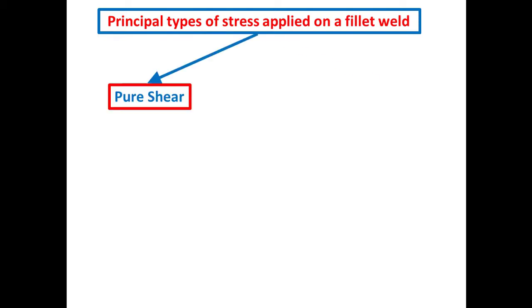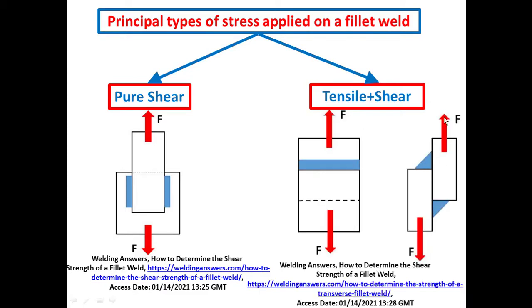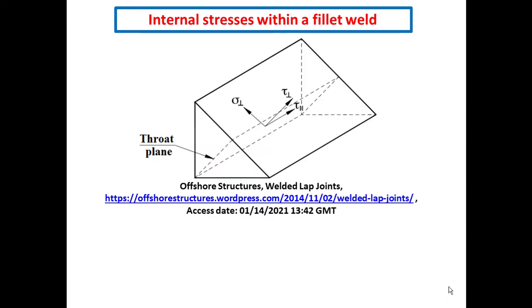Now I will talk about the principal types of stress applied on a fillet weld. There are the pure shear stress and the tensor plus shear stress. The pure shear stress is encountered when the direction of the loading is parallel to the weld, as indicated by this figure. The tensor plus shear stress is encountered when the direction of the loading is both parallel and perpendicular to the weld, as shown in this figure where the loading direction is parallel and perpendicular to the contact surface between the weld and the workpiece.